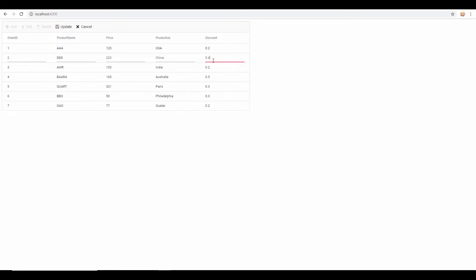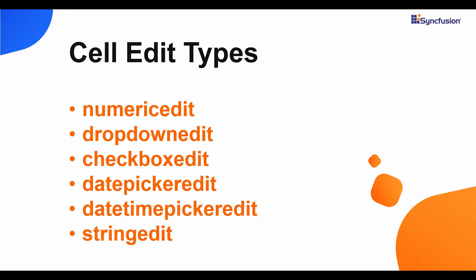In case I want to display relevant editor components on these columns, there are six different kinds of built-in edit types: numeric edit, drop down edit, checkbox edit, date picker, date time picker edit, and string edit. These edit types add the corresponding components onto the edited column — for example, numeric edit adds a numeric text box, while string edit adds a simple text box, which is the default behavior.